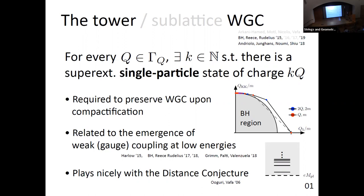The tower weak gravity conjecture is like the mild weak gravity conjecture, but we replace multi-particle with single particle. For every direction in charge space, we have to have some single-particle super-extremal state. This is required if we want to preserve the weak gravity conjecture on compactification. It's also related to the emergence of weak coupling, particularly weak gauge coupling at low energies. This tower of particles makes the gauge coupling weak through renormalization, and it plays nicely with the distance conjecture.